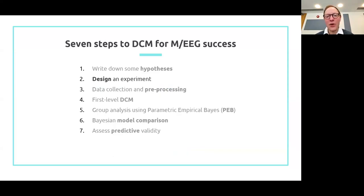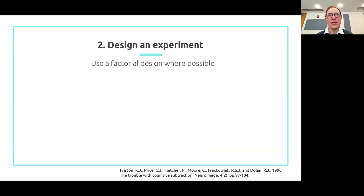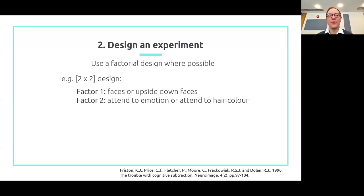So that was hypotheses. Now you've written down those hypotheses, it's time to design an experiment. There aren't too many specific requirements for MEG analysis — certainly you don't have all the restraints that fMRI brings. One piece of advice I'd give is to use a factorial design where possible. A factorial design directly maps onto how a DCM gets set up. Consider this example two-by-two factorial design: factor one is whether faces are displayed in the normal position or upside down, and the second factor is whether the participant was cued to attend to the emotion of the face or to the hair colour as a control condition.